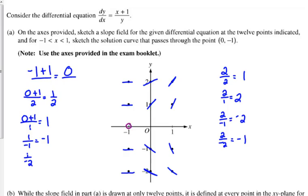If the solution curve passes through the point (0, -1), well that's a slope of negative 1. And at (1, -2), it's a slope of negative 1. So really, that's just a straight line.